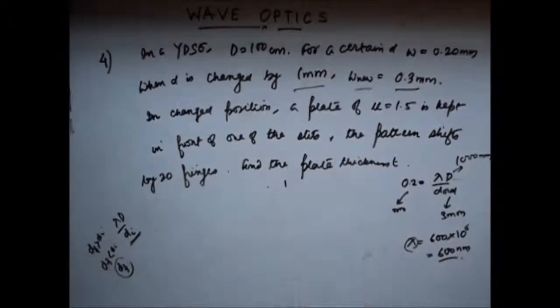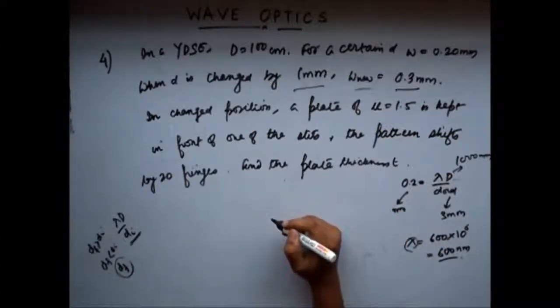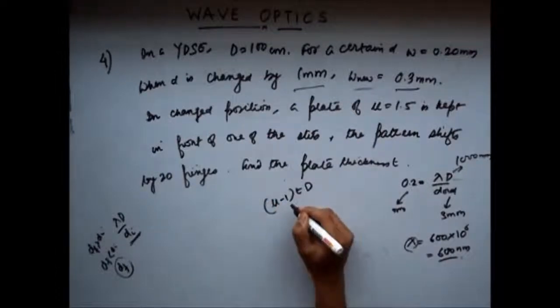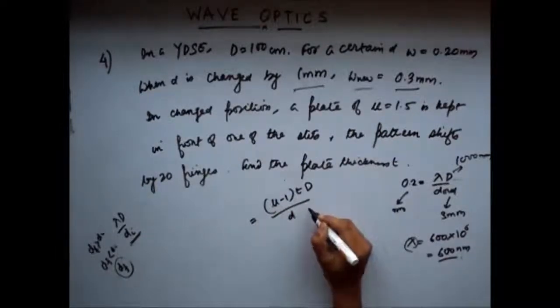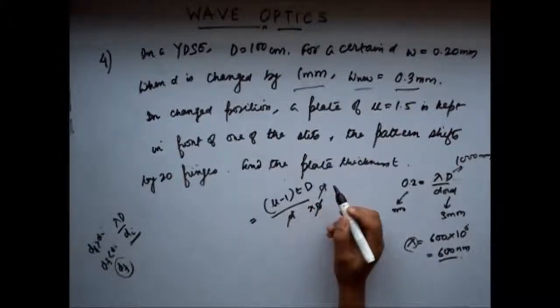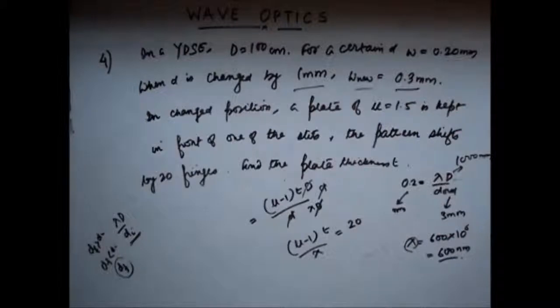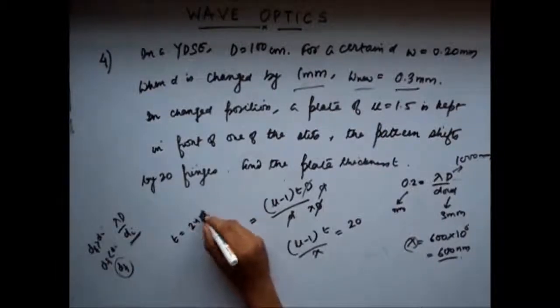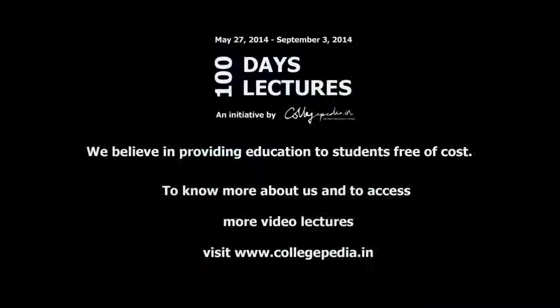Now, let us move on to the question. It says that the pattern shifts by 20 fringes. You know that the first maxima when you introduce a glass slit shifts by mu minus 1 t d by this distance. Now, if I divide this distance divided by the fringe width, I will get the number of fringes. So, I will divide by the fringe width, which is lambda d by t. So, mu minus 1 t by lambda, this is equal to the number of fringes, that is 20 in this case. From this, if you solve this, you will easily get that the thickness of the glass slab, which was used is 24 into 10 to the power minus 6 meter. So, this is my thickness of the glass slab, which has been reduced. Thank you.